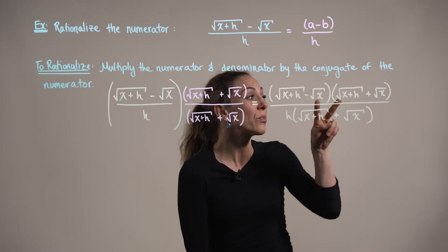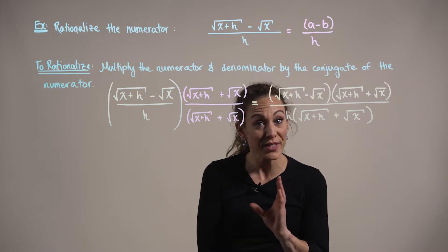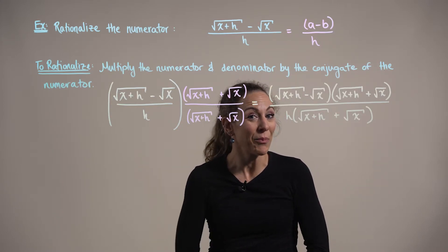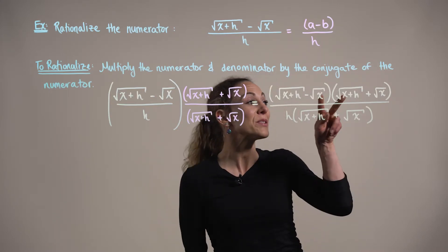We can recall that the product of conjugates produces the difference of squares formula. But let's verify it for ourselves by multiplying these terms out.